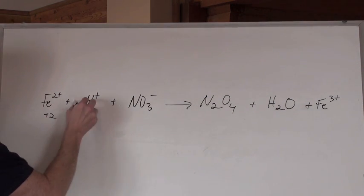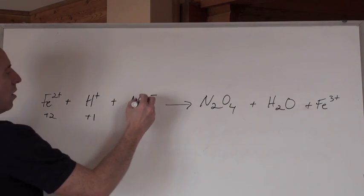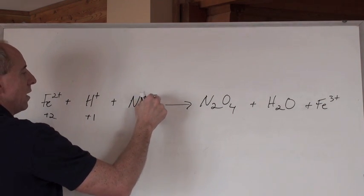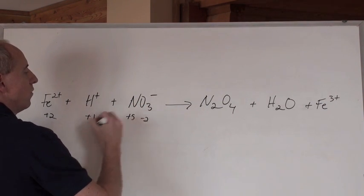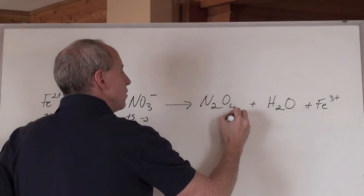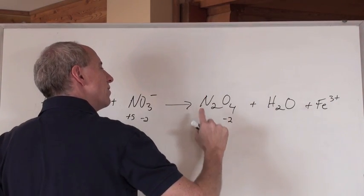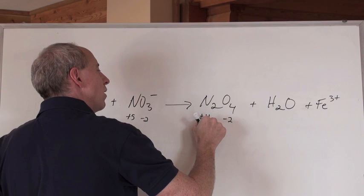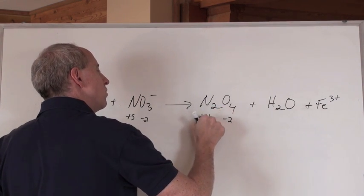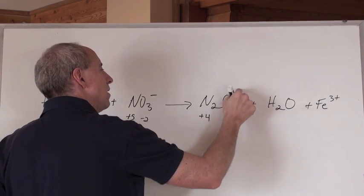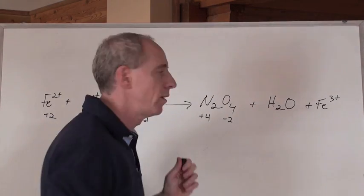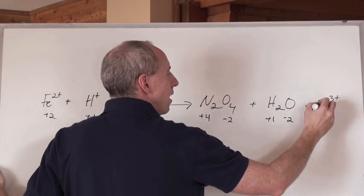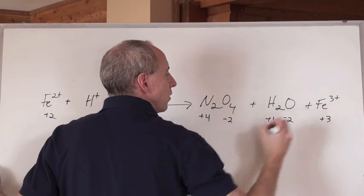Fe2+ is plus 2. H+ is plus 1. Oxygen's always minus 2. Minus 2 times 3 is negative 6. Got to keep it negative 1, so the nitrogen is plus 5. Oxygen is minus 2. Minus 2 times 4 is negative 8. That means that each of these nitrogens have to be plus 4, because plus 4 times 2 is 8, plus negative 8, the total is 0. Hydrogen is plus 1. Oxygen is minus 2, always in water. Looks like that. Fe3+ is plus 3.